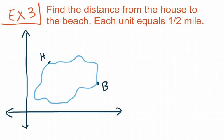For our final example, example three, we're asked to find the distance from the house to the beach. So here we have at point H, we have the house. Over here at point B, we have the beach. So we want to figure out the distance between those two. So just like before, we're going to draw a line going from the house to the beach. So we're trying to find the distance of segment HB. So to do that, we're going to draw a right triangle.